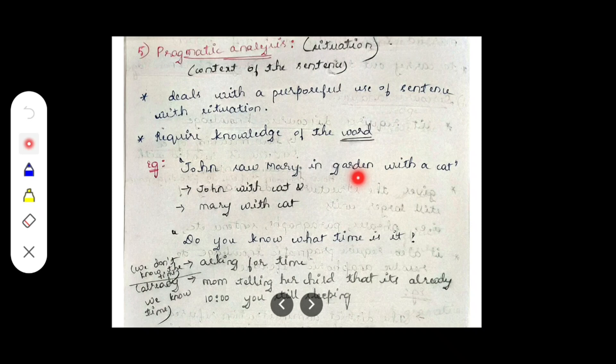The example is: 'John saw Mary in the garden with a cat.' This sentence is grammatically correct, has meaning, and is a valid sentence. However, the situation may be interpreted in two ways. The first interpretation is that John is holding a cat, and he saw Mary in the garden.